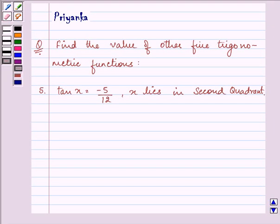Hi and how are you all today? Let us discuss the following question. Find the value of other five trigonometric functions. The value of tan x given to us is -5/12, and it's also given that x lies in the second quadrant.